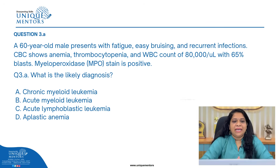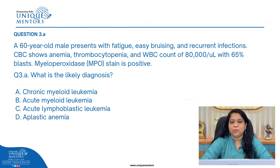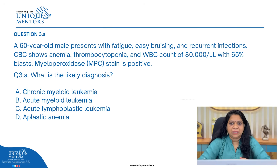The third question is also a case-based question. A 60-year-old male presents with fatigue, easy bruising, and recurrent infections. The CBC report shows anemia, thrombocytopenia, and a WBC count of 80,000 per microliter with 65% blast cells. The myeloperoxidase stain is also positive. The first question asks: what is the likely diagnosis? Key clues are: elderly patient, bleeding tendency, recurrent infections suggesting immunodeficiency, anemia, thrombocytopenia, and markedly elevated WBC.